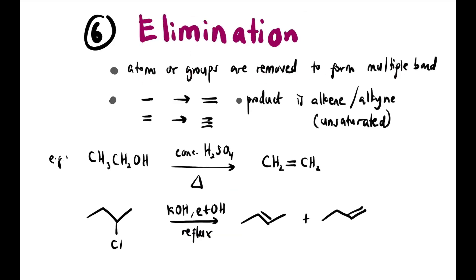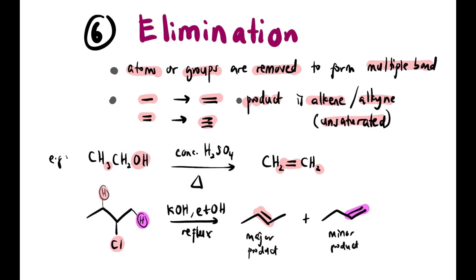Elimination is where atoms or groups are removed to produce a multiple bond — single to double, or double to triple. Products are usually alkenes or alkynes. In the first example, H is removed from the left carbon and OH from the right carbon, producing a double bond. In another example, removing H and Cl can give different alkene products (major or minor product). As long as an alkene is produced, it is elimination.